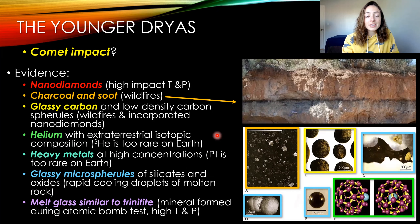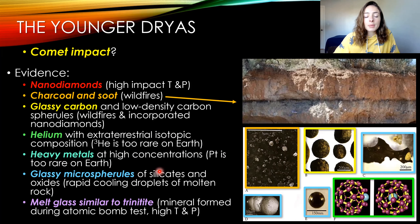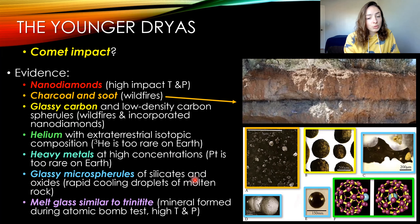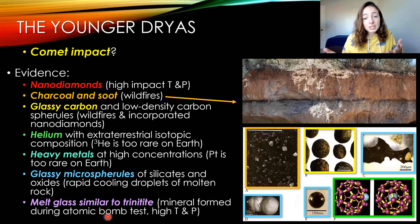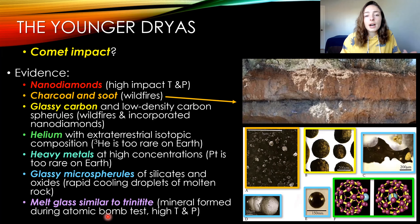We also have helium isotope evidence: isotope ratios in the sediment at this time interval show an extraterrestrial isotopic composition — more helium-3 than helium-4 — which is not a common ratio on Earth. We also have heavy metal evidence, with elements like platinum at concentrations too rare on Earth to have reached those levels naturally. Additionally, there are glassy microspherules — silicate and oxide spherules — indicating rapid cooling of droplets from molten rock, which we see at other impact sites as well.